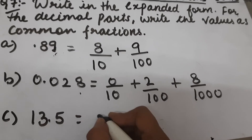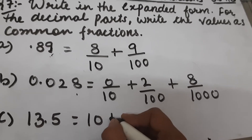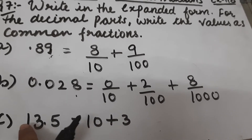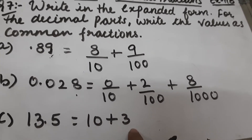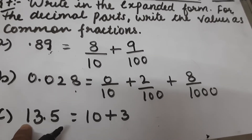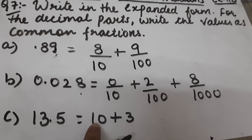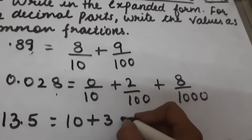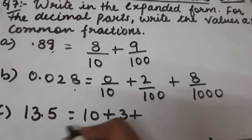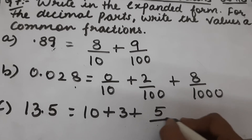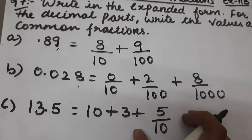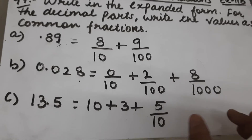Part c is 13.5. So 13 means 10 plus 3. The ones place is 3, and the tens place means 1 multiplied by 10, which is 10. Then the digit just after the decimal is the tenths place, so 5 upon 10, since 5 is at the tenths place.